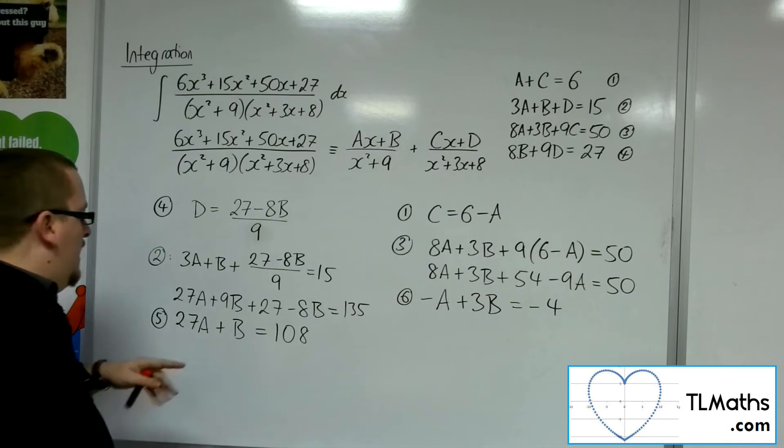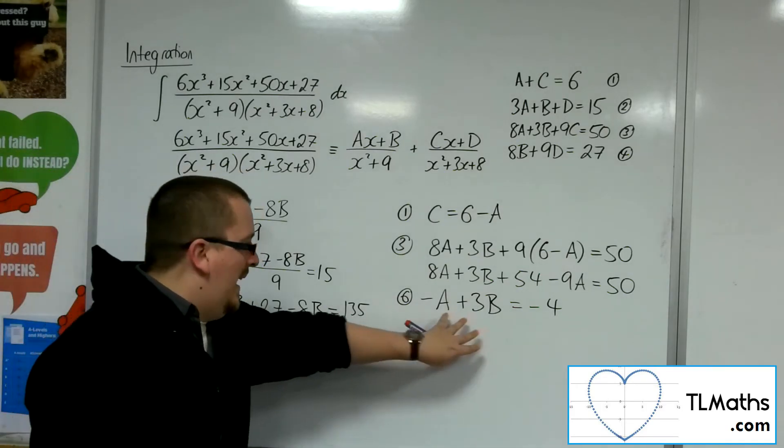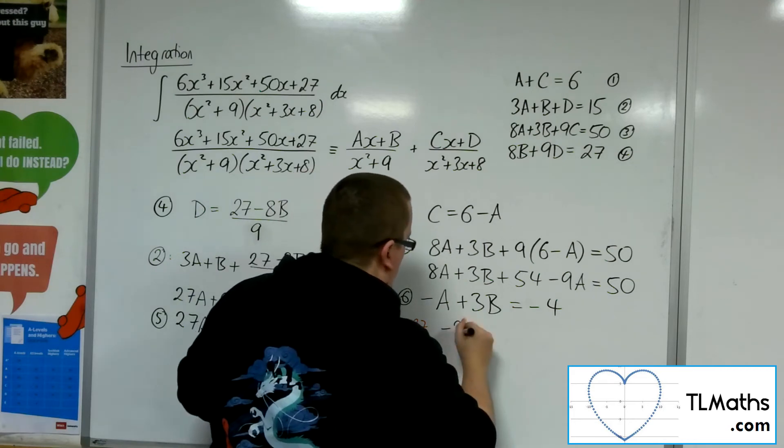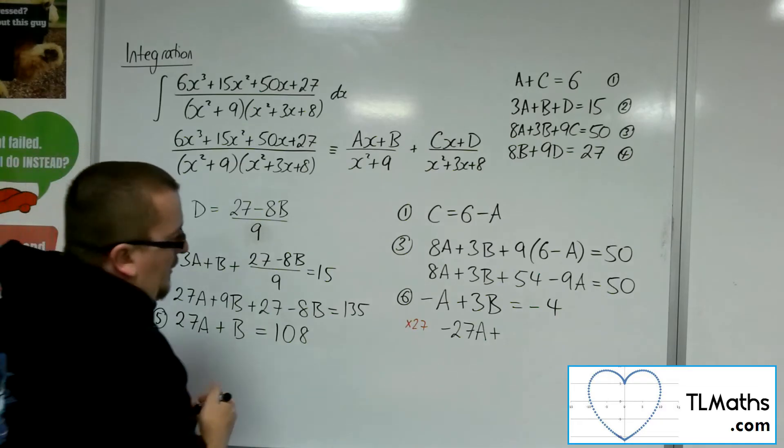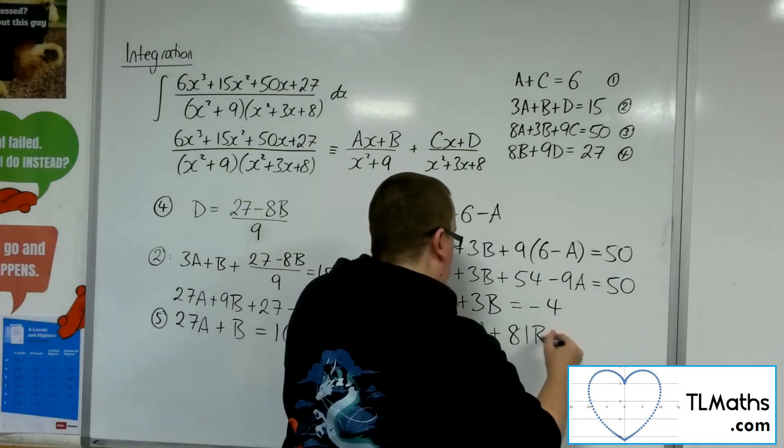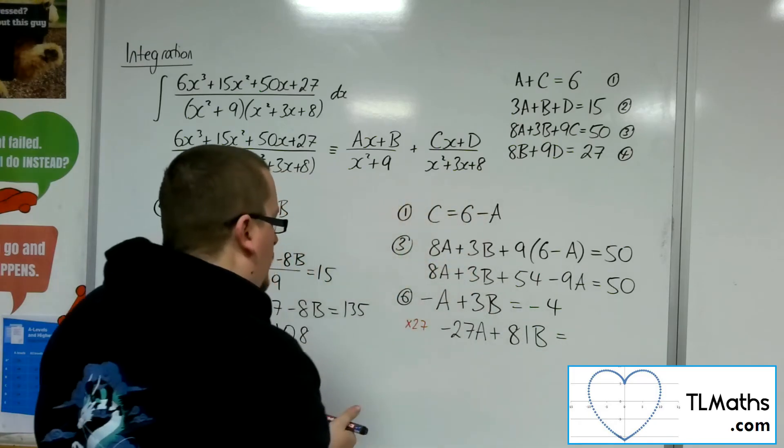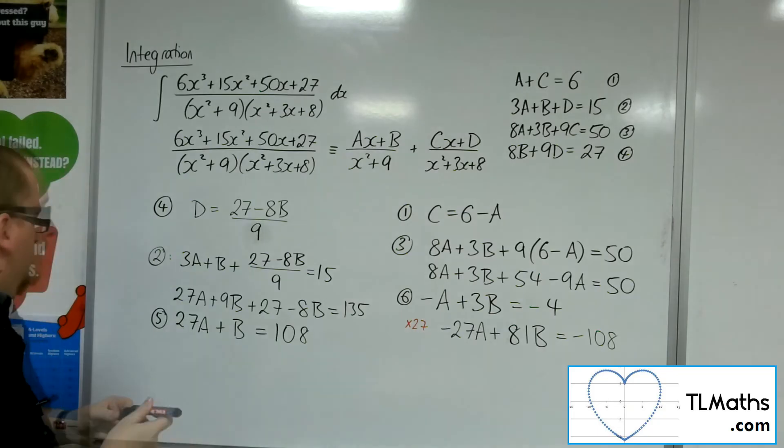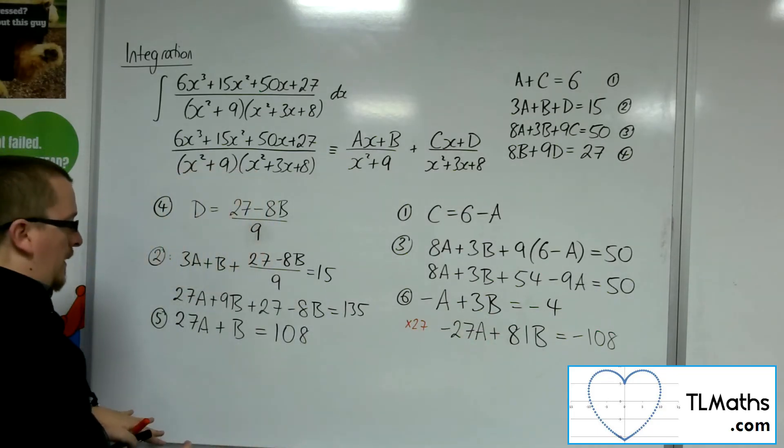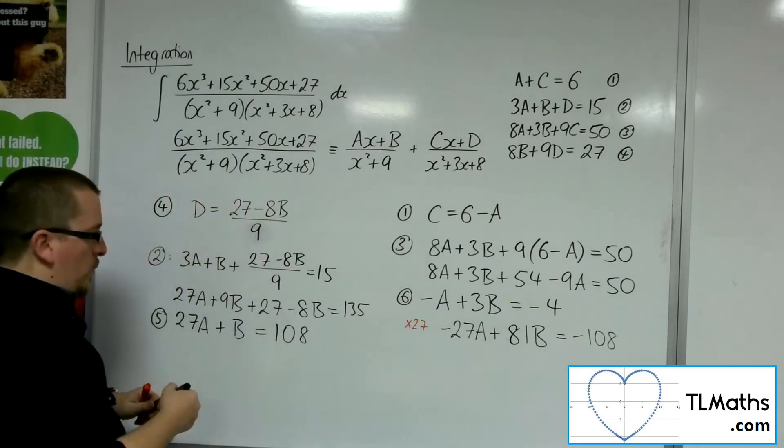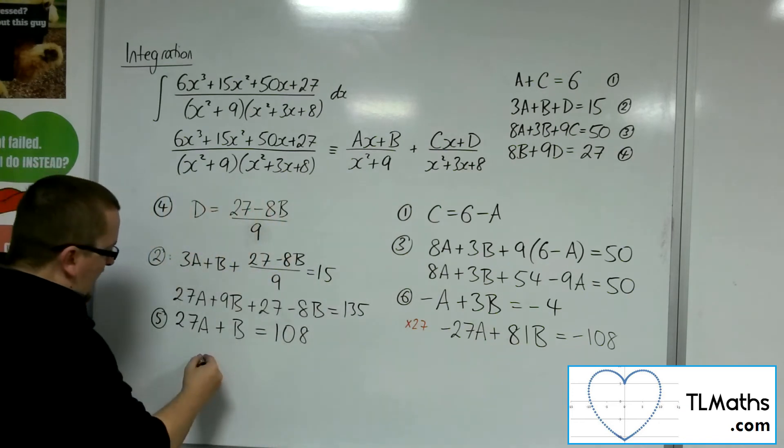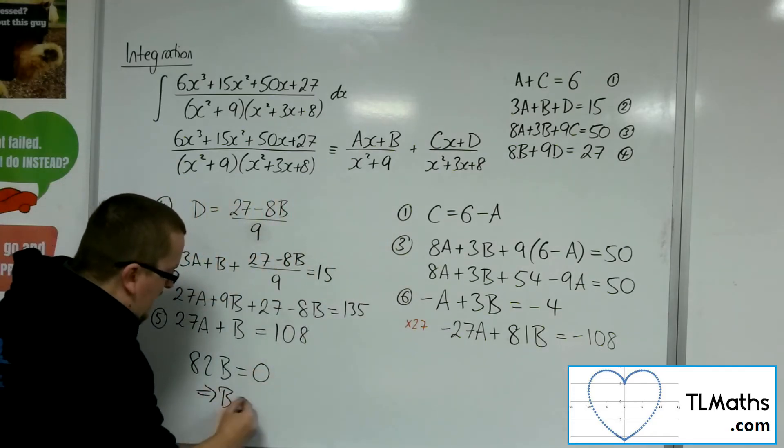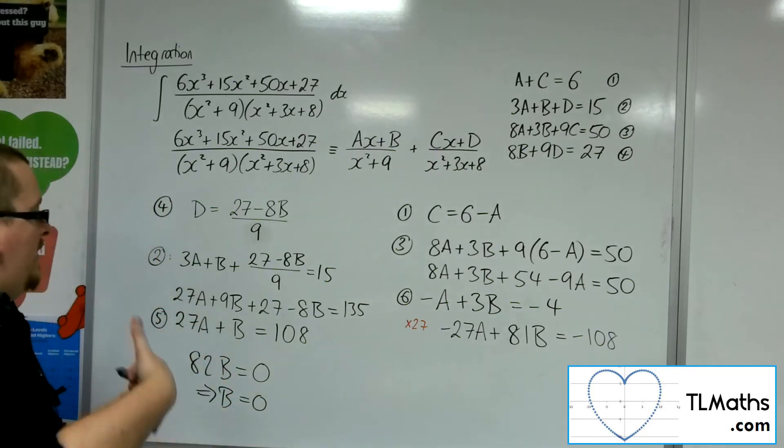So I'm now going to work with this one and this one to combine them. So if I multiply this one by 27, add them together, that'll be my route through. So multiply this one by 27. We're going to get minus 27a, 3 lots of 27 is 81, so 81b, 4 lots of 27 is 108. So minus 108. So if we add these two together now, the 27a and the minus 27a will get you 0. The b plus 81b will get you 82b. 108 plus minus 108 is 0. So that means that b is 0. Excellent. That's one of them done.